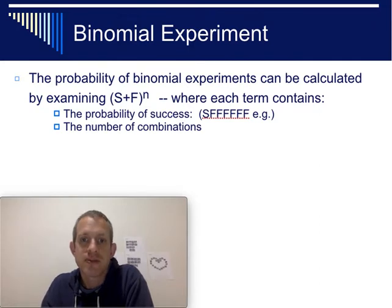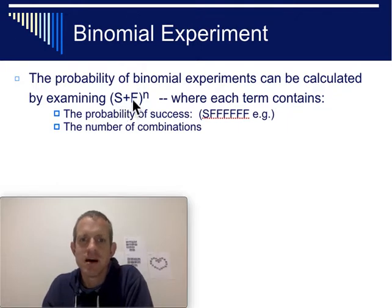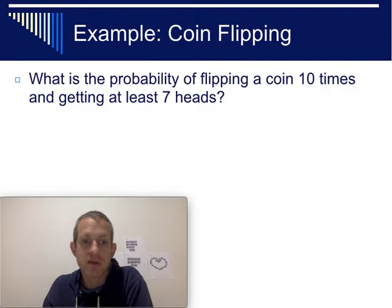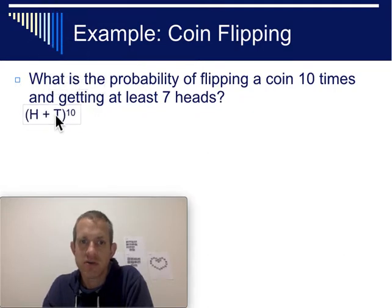Binomial experiments — those probability calculations — can be found by examining this binomial. If you take S, which usually stands for success, plus failure, and raise it to a certain power, each of those different terms will tell you the probability of success and how many different ways there are of making that happen. So let's look at the coin example. To answer this question, I need to take this polynomial and multiply it out: H plus T raised to the tenth, because I either get a heads or a tails and I'm repeating this experiment ten times.